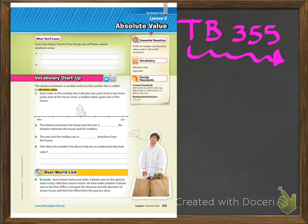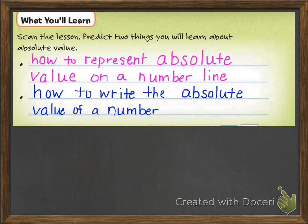On textbook page 355, you can see the young man holding the bags of groceries. At the top it says: scan the lesson, predict two things you will learn about absolute value. The two things the textbook points to are: how to represent absolute value on a number line, and how to write the absolute value of a number.